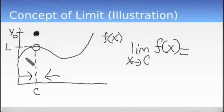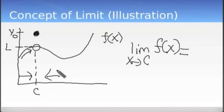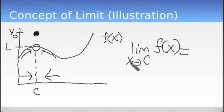As x approaches c from the left side, the function increases and approaches that circle value, which is L. As x approaches c from the right side, the graph comes in and approaches that same value, which is y equals L. And therefore we say that the limit as x approaches c of f of x is L. So if both sides agree as to what value they're approaching, then that's the value for the limit.